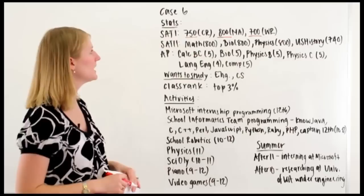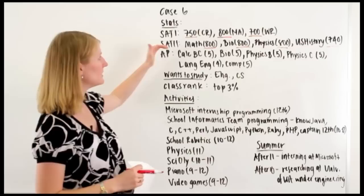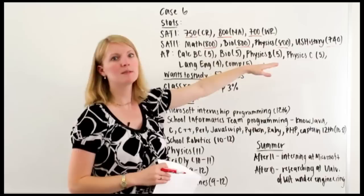SAT-2's, student has taken four. We see math is 800, bio is 800, physics 800, and U.S. history is a 740. Again, I see this student is really strong in the math and sciences, and still strong by many standards in humanities, but I'm guessing that the sciences are more his thing.